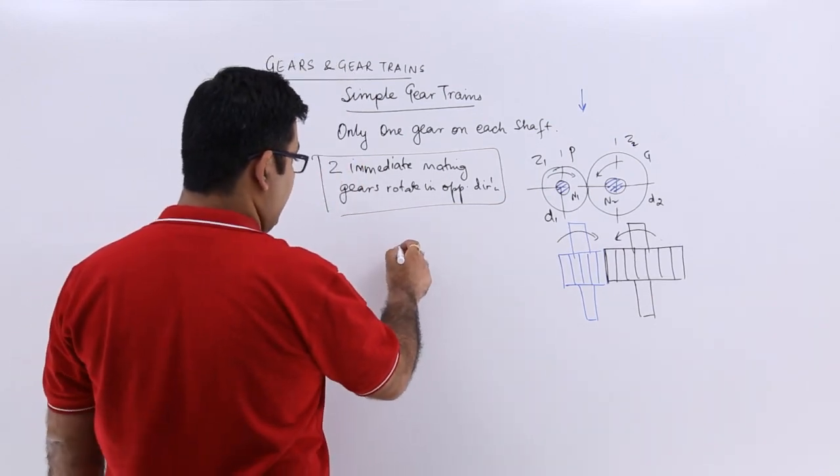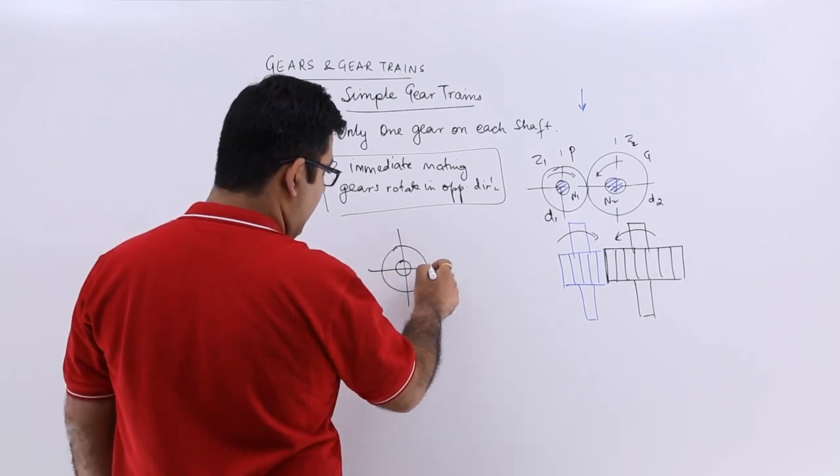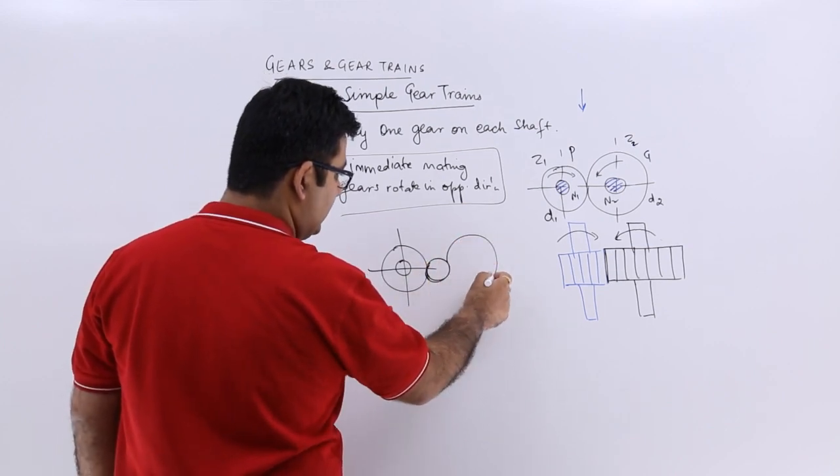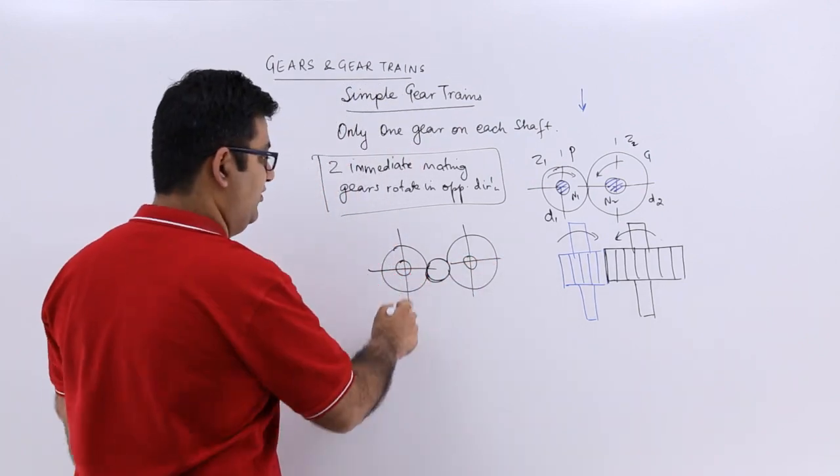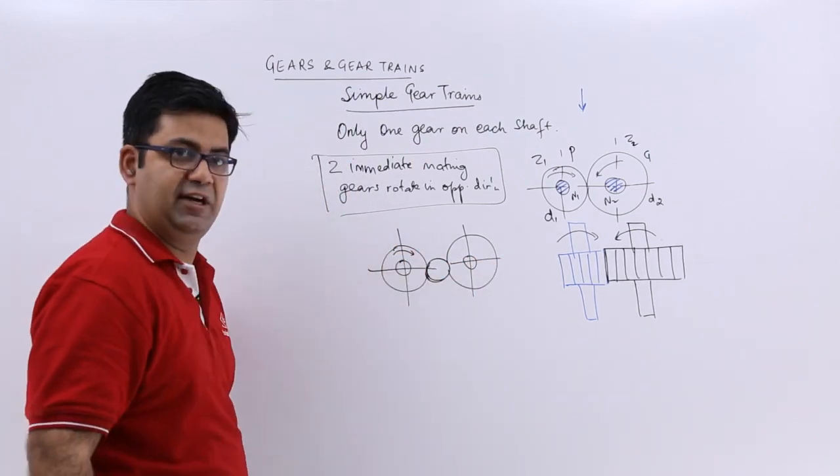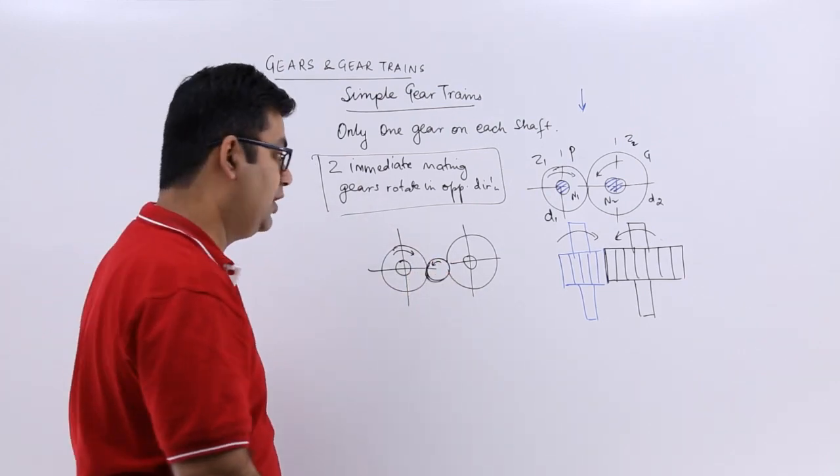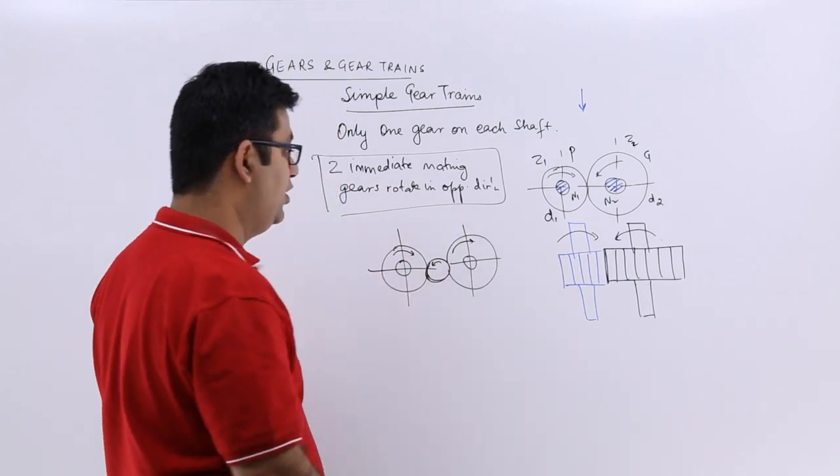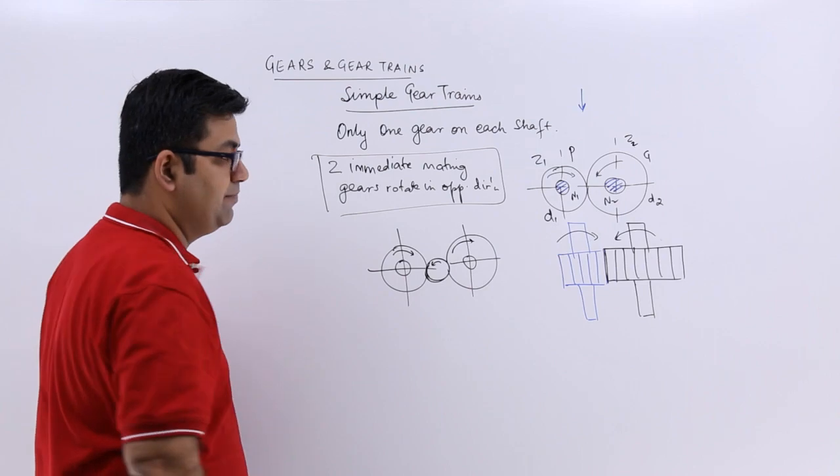I will say this is the driver. Then I will put a small gear in between, a very small gear and this is the bigger gear, which is the driven. If this goes in the clockwise direction, this idle gear will go in the anticlockwise direction. And due to this anticlockwise direction, the driven would rotate in the clockwise direction, which is the same as the driver.